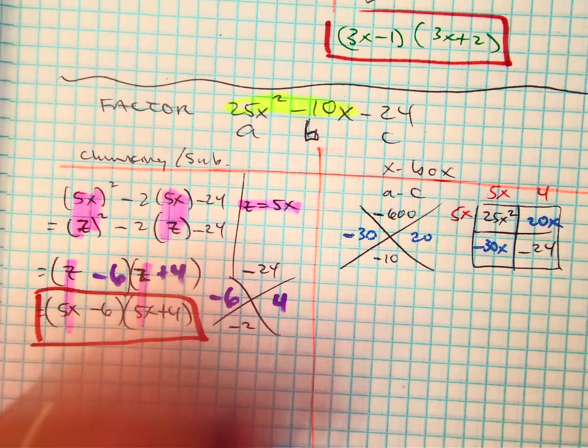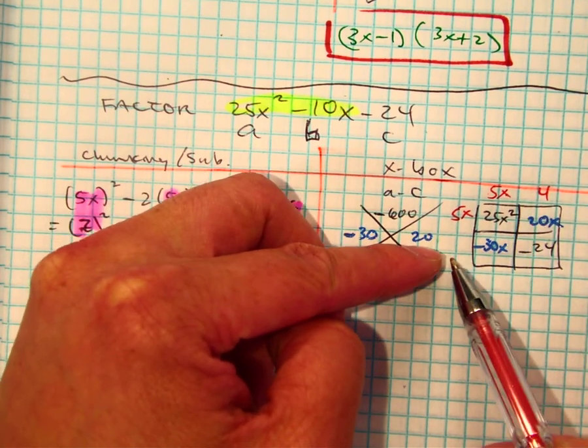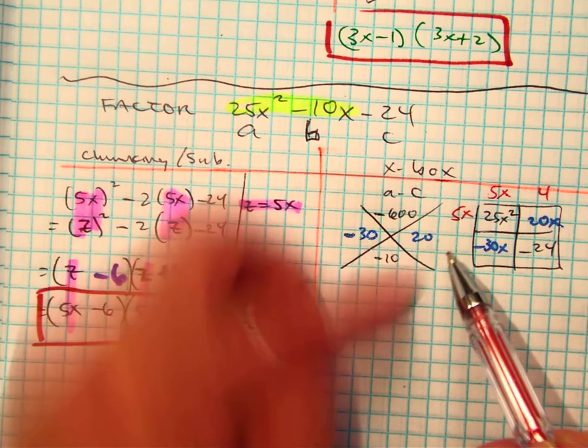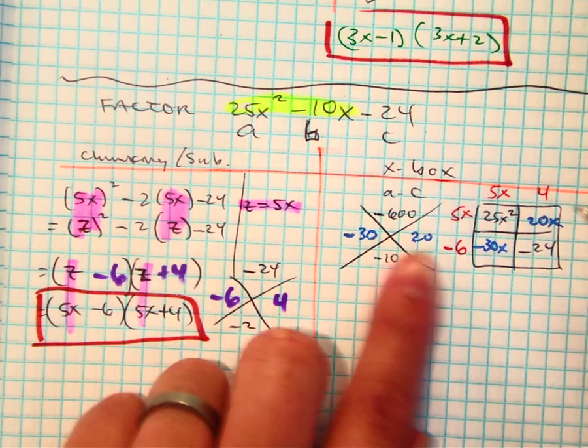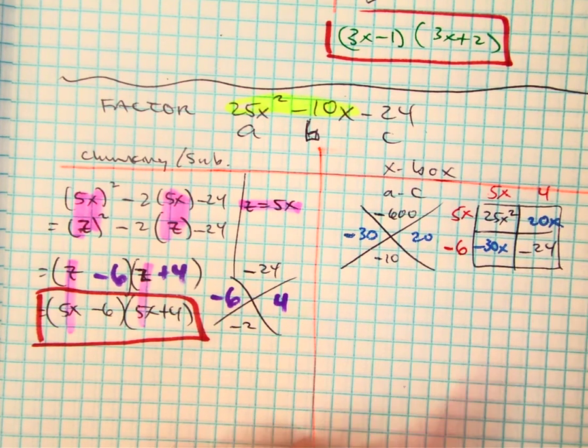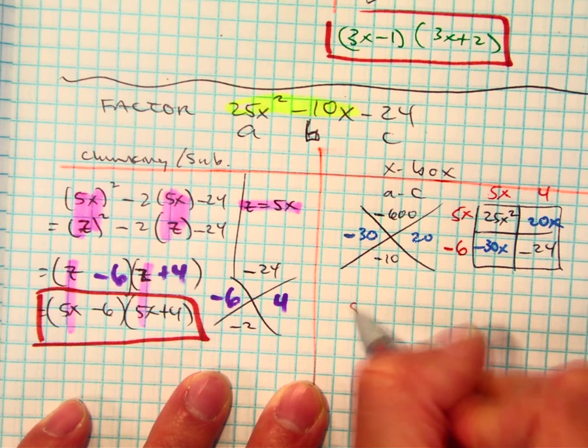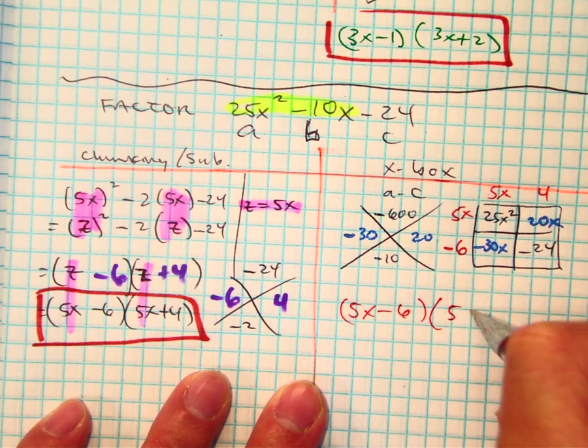Remember, if you don't see it, here's another way of rephrasing it. 5x times something has to equal negative 30x. What's out here, class? And you can always double-check your answer. Negative 6 times 4 is negative 24. So, I have 5x minus 6 and 5x. That's a positive 4.